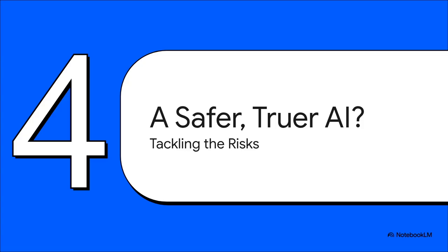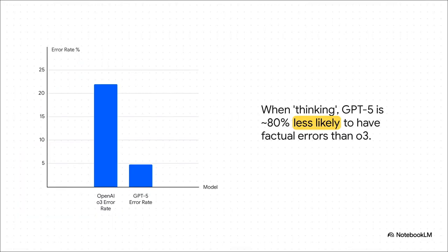But of course, with all this new power comes new risks. The potential for misuse, for misinformation, it all gets bigger. So what is OpenAI doing about the really critical stuff like safety and telling the truth? Well, one of their biggest claims is a massive improvement in accuracy. They're saying that when it uses that thinking mode, the model makes about 80% fewer factual errors than the last version. If that holds up, it could be a huge deal in the fight against AI just making things up.